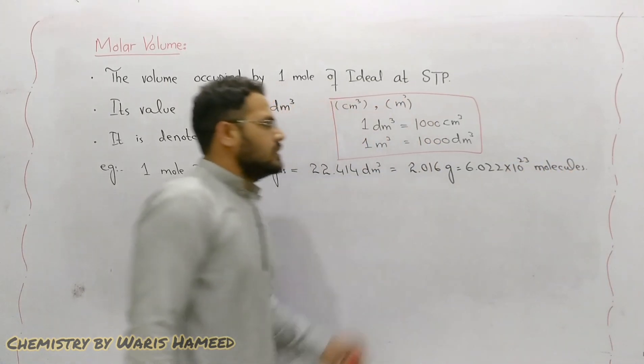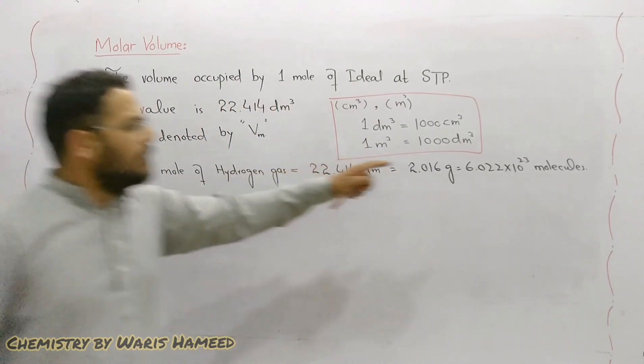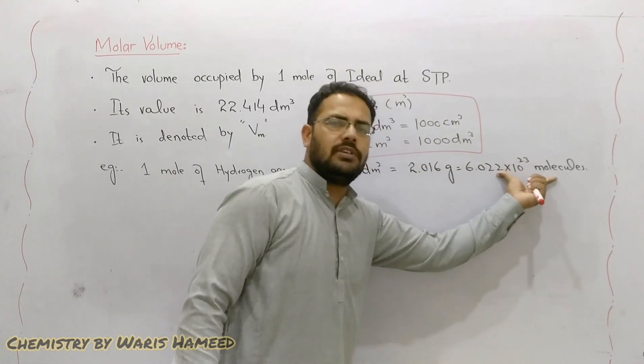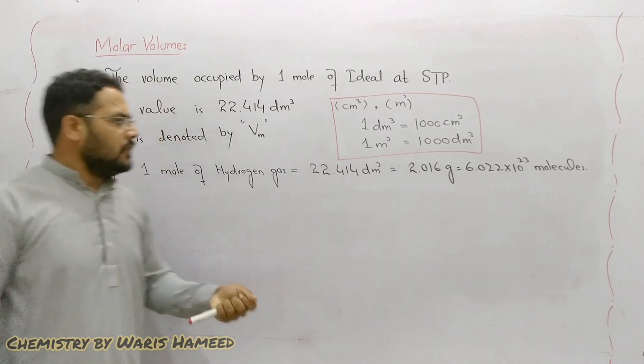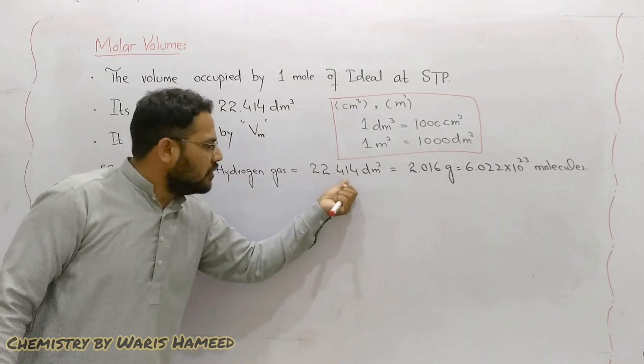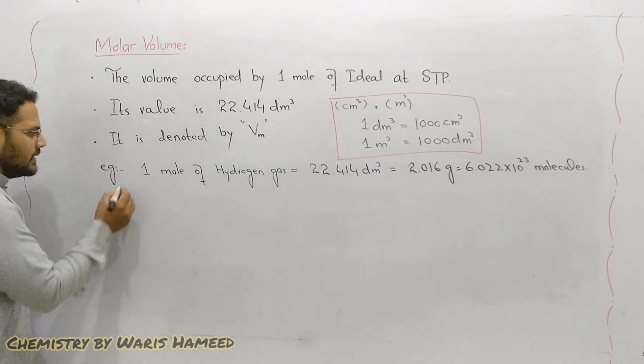If we have 6.022×10²³ molecules of hydrogen then they will occupy the molar volume which is 22.414 dm³. Another example.